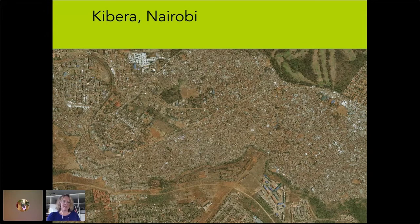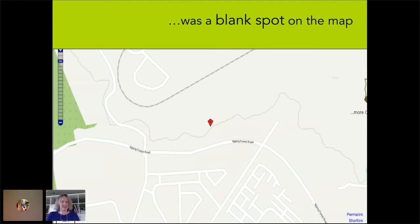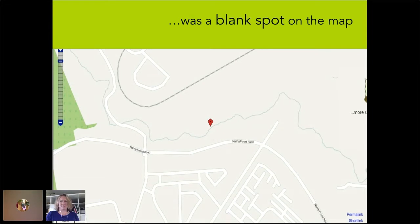The area you're looking at is around an estimated two and a half square kilometers, and also an estimated quarter of a million residents — so an extremely tightly inhabited area. And in 2009, it was what you might call a blank spot on the map. This is OpenStreetMap, and most of my work centers in some way around OpenStreetMap.